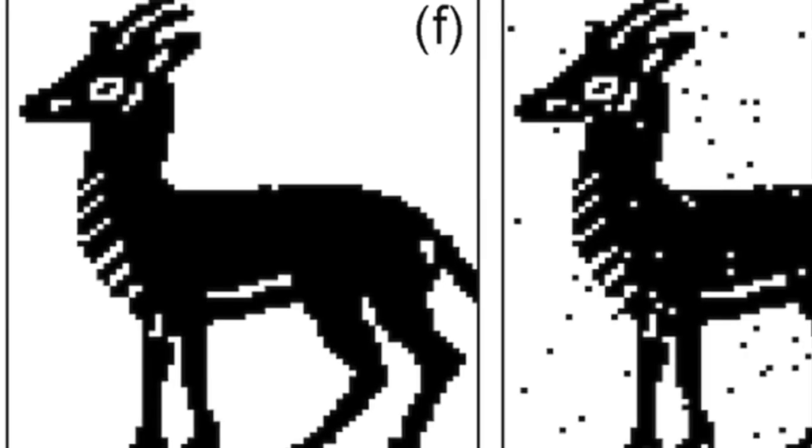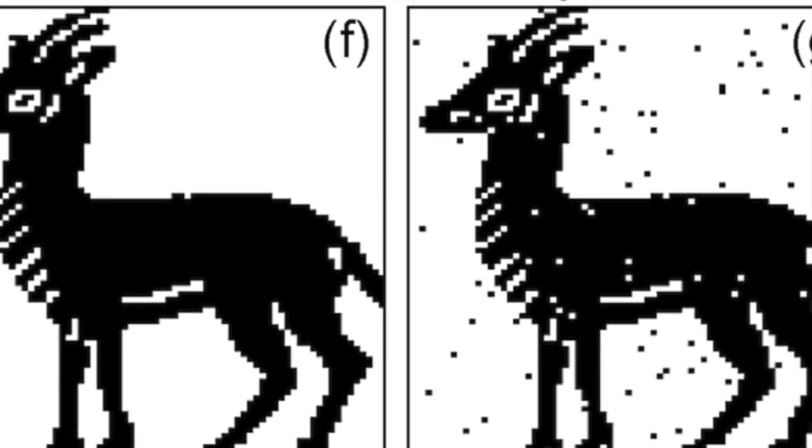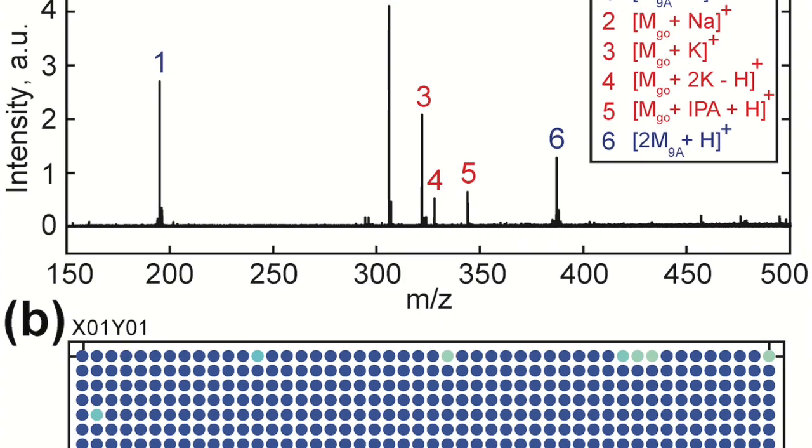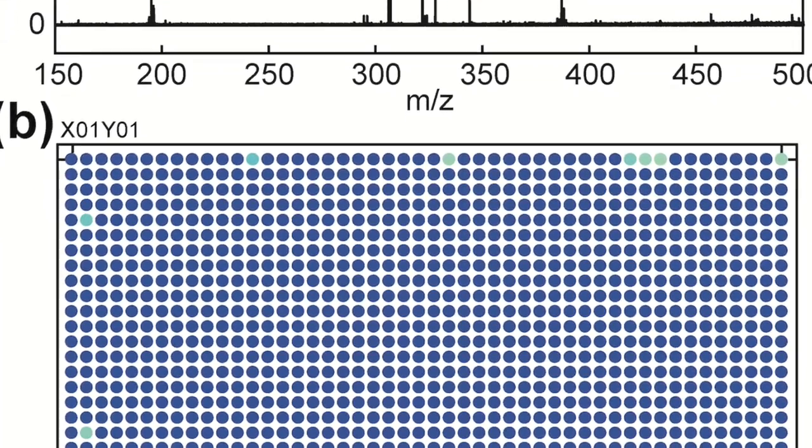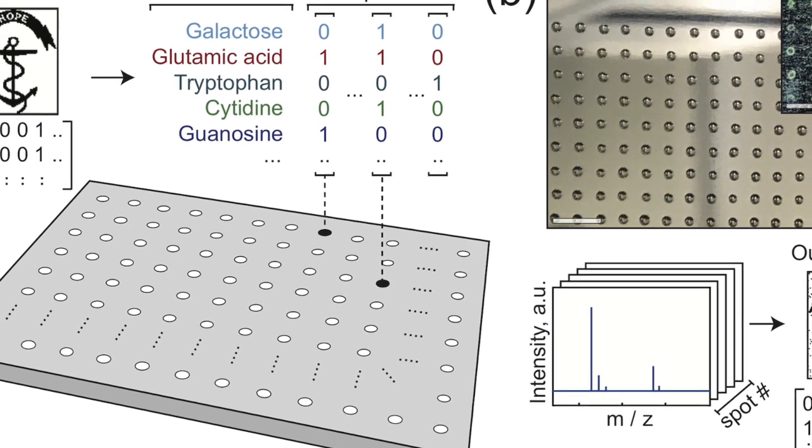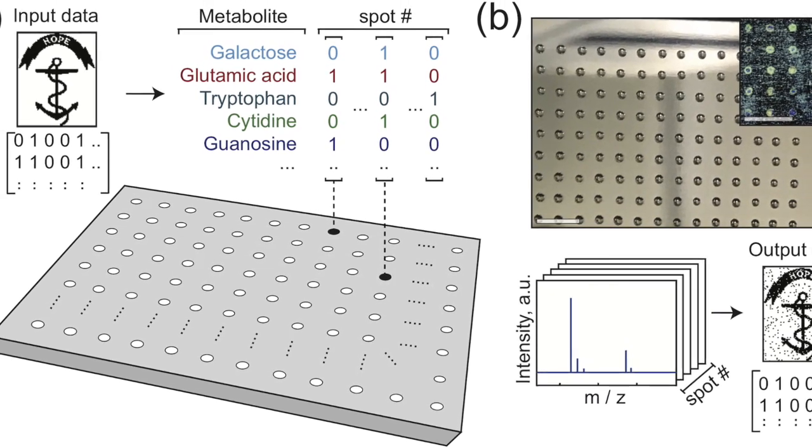The researchers have now shown that they can encode image files the size of a kilobyte into the liquid. They can also read the information back out again. To do this, they first created 36 different metabolic liquid compounds. They then programmed a robot to precisely place nanoliter sized droplets of the liquid on a metal plate.